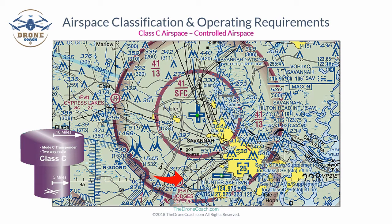There is also a Class D delta dashed-dotted airspace to the southeast. The ceiling of Class D airspace is always shown in a number inside a blue bracket — '25' indicates 2,500 feet with two zeros removed. This Class D runs from the surface up to 2,500 feet. Above 2,500 feet, Class C airspace takes over and continues up to 4,100 feet MSL.